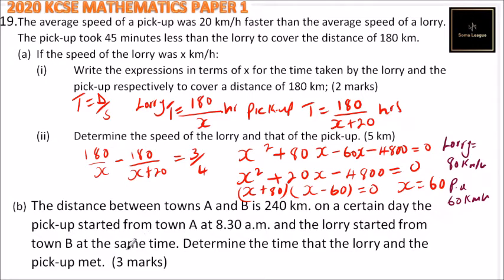From there we go to part B of the question. We are told that the distance between town A and B is 240 kilometers. On a certain day, the pickup started from town A at 8:30 a.m. and the lorry started from town B at the same time. Determine the time that the lorry and the pickup meet.